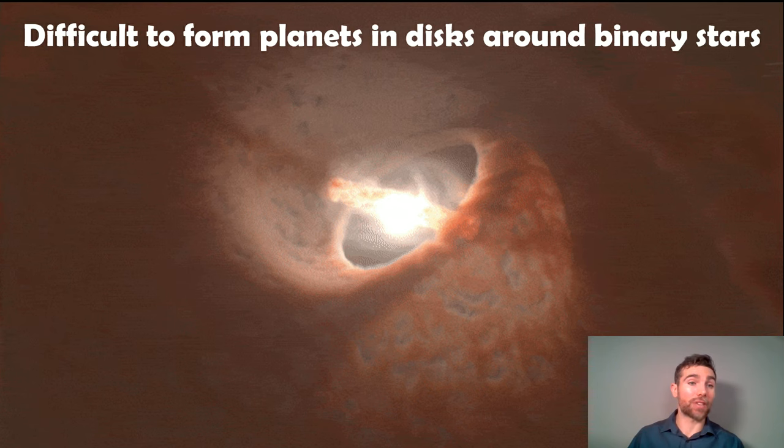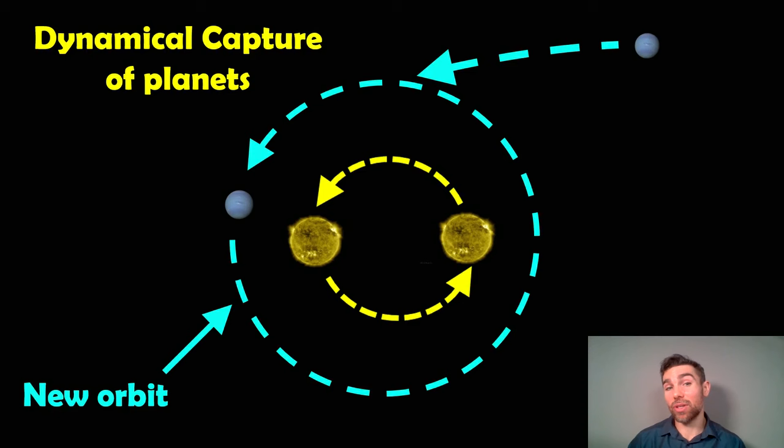You're constantly disrupting the disk and preventing planets from forming. It can be quite difficult to form planets around these binary star systems. The other scenario is that they end up being captured.